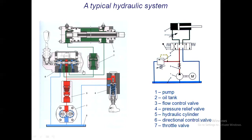A typical hydraulic system consists of: first, the pump; second, the oil tank; third, a flow control valve; fourth, the pressure relief valve; fifth, a hydraulic cylinder; sixth, the direction control valve; and seventh, a throttle valve.